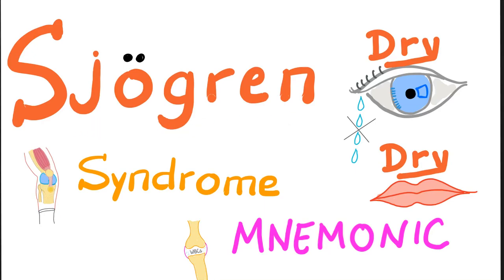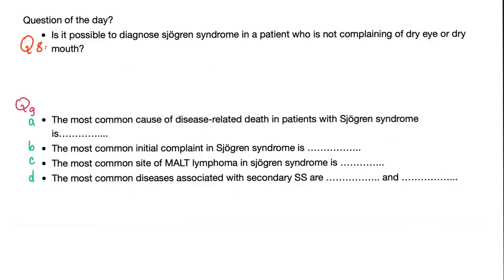Hey guys, it's Medicosis Perfectionelis, where medicine makes perfect sense. Today we have a mnemonic about Sjogren's syndrome. We have talked about Sjogren's syndrome in the previous two videos in my rheumatology playlist. Today it's a beautiful mnemonic — not just one, but many.